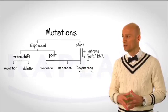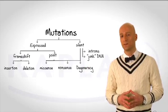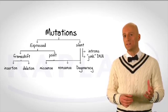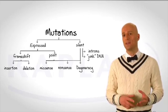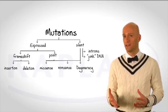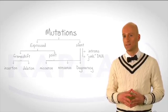So here is a flowchart that shows you the different ways in which mutations can arise in the genetic code and then be expressed or silenced in the amino acid sequence.